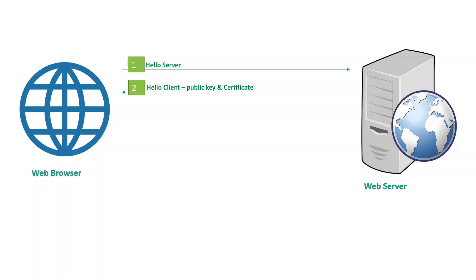There are a number of certificate authorities in the market and they are the ones who sign your certificate. By default, whenever you install any browser, all these certificate authorities' public certificates are imported by default. If you go to the certificate management section in your browser, you can see a lot of certificates — those are the public keys of the certificate authorities. The browser already has the public key of the certificate authority, and with that public key the browser validates the server certificate. Once validation is done and the certificate is genuine, the browser will generate an asymmetric session key.